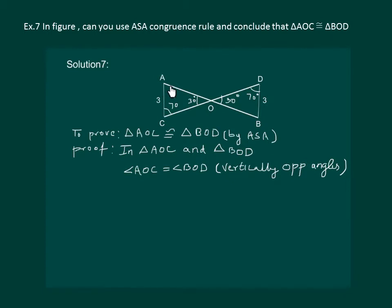Let us try to find angle A first. We know that sum of the angles of a triangle is 180 degrees. So we have angle A plus 70 degrees plus 30 degrees should be equal to 180 degrees for triangle AOC. This gives us angle A equal to 180 degrees minus 100 degrees which is equal to 80 degrees.